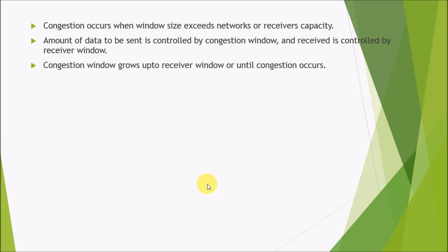Congestion occurs when the window size exceeds the network or receiver's capacity. The window size represents the number of packets sent at a time. And if it exceeds the capacity of the network or the capacity of the receiver, then congestion will occur and the packets will be lost.